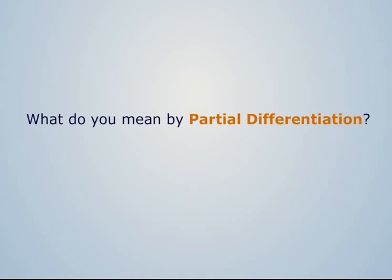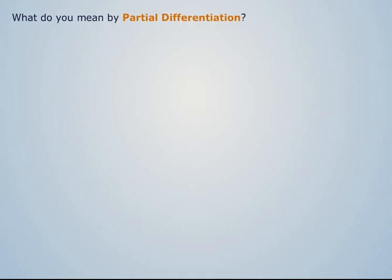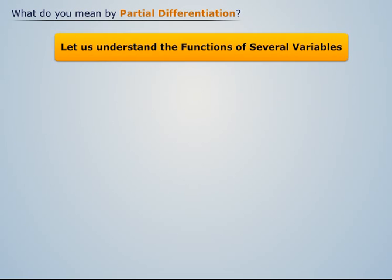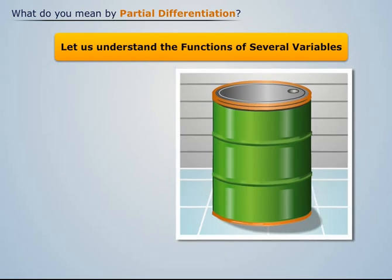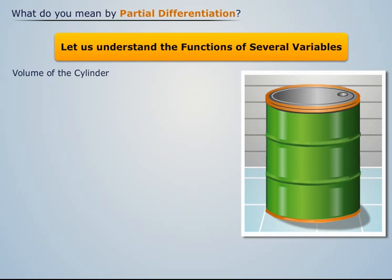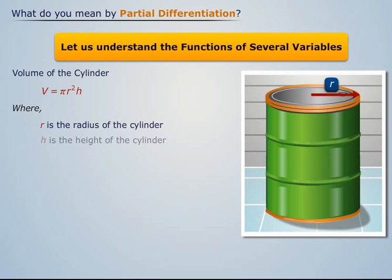What do you mean by partial differentiation? To understand the concept of partial differentiation, let's first understand the function of several variables. Consider a tank which is cylindrical in shape. We know that the volume of a cylinder is given by V = πr²h, where r is the radius of a cylinder and h is the height of the cylinder.